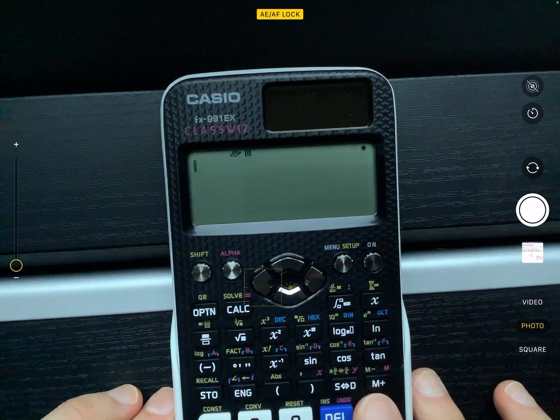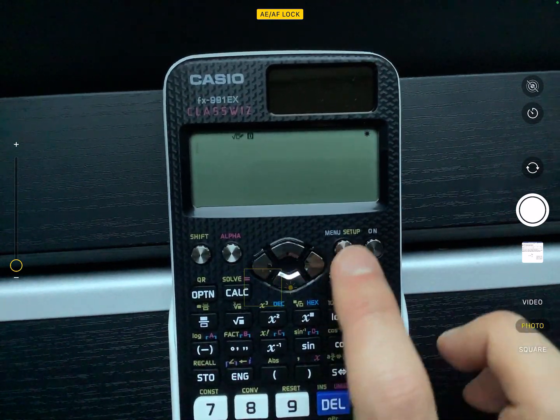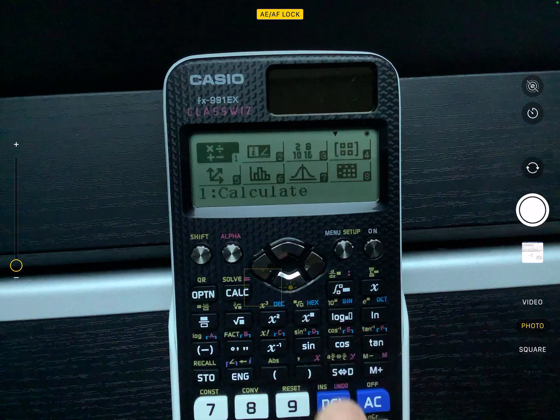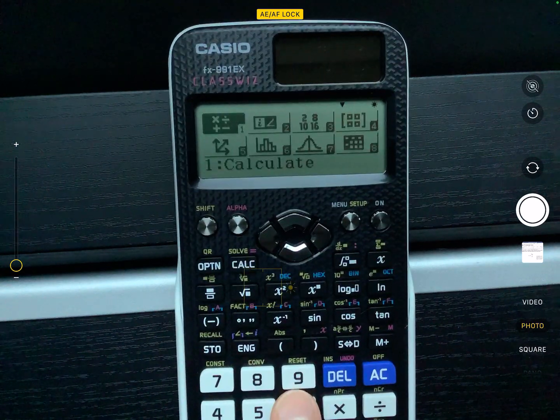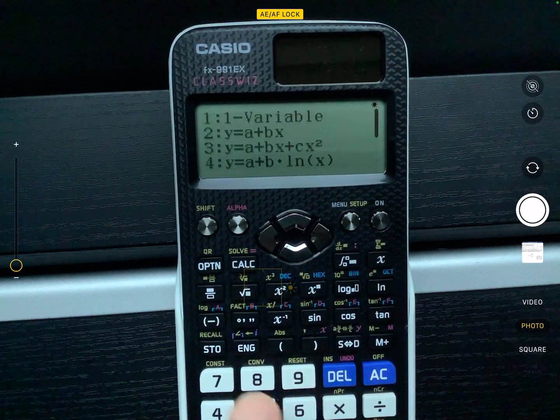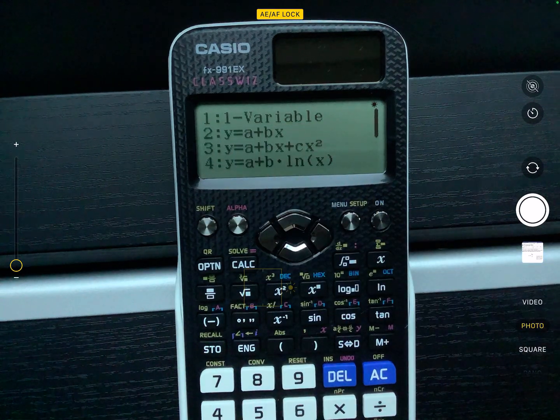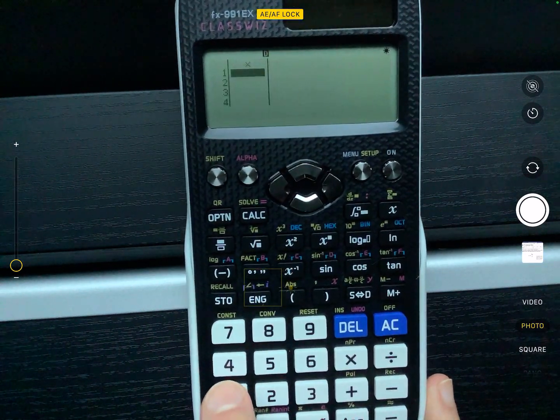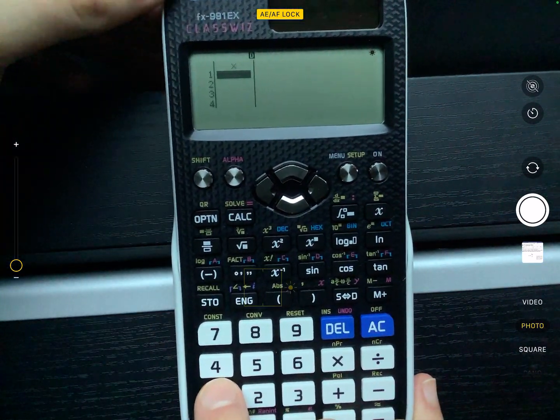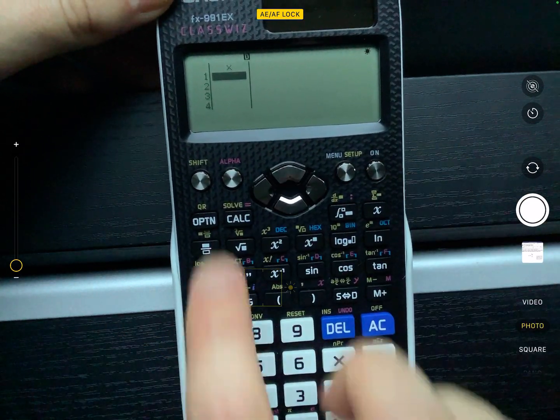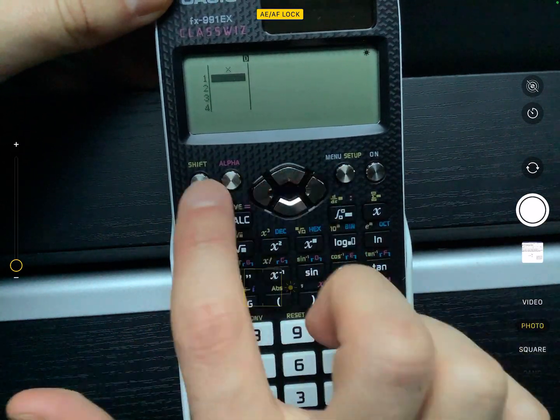I'm now going to show you with this calculator what needs to be done with the Class Wiz. So you're going to go to menu, and you're going to go to statistics, which is number six. And you're going to be doing one variable calculation, so I'm going to press number one. And you'll notice that there is no frequency.